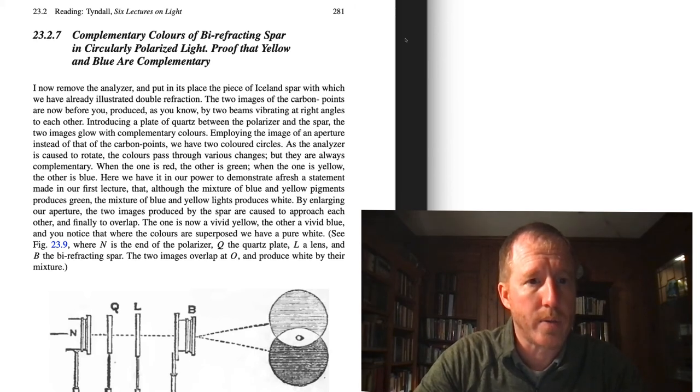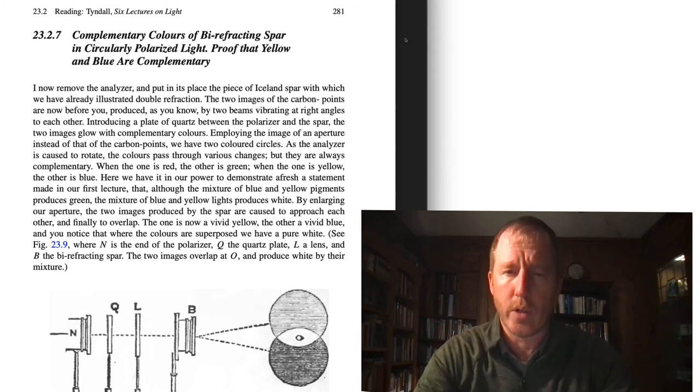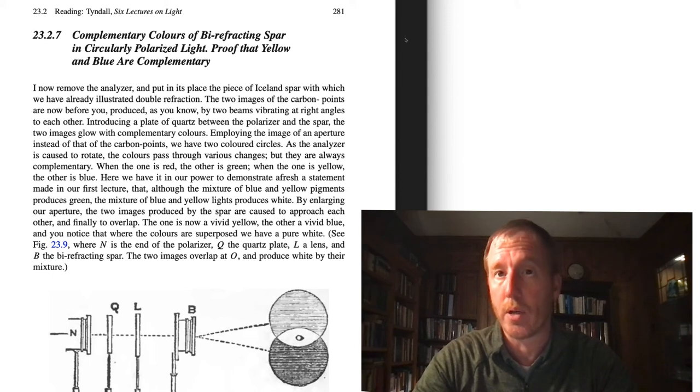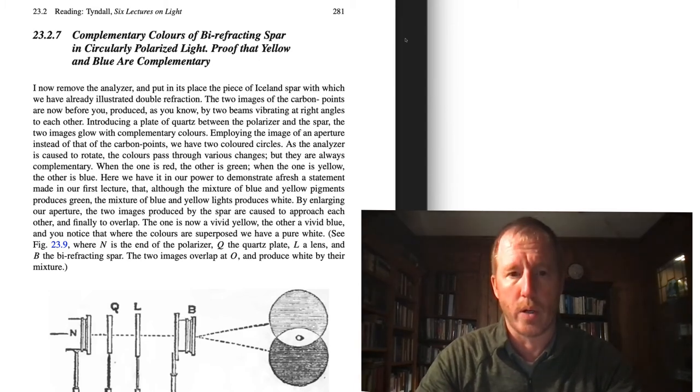Let me jump ahead to, he talks about some experiments. And I think this is a challenging section, page 281, where he illustrates that blue and yellow are complementary colors. And I don't want to spend a lot of time on this because I think he refers to some earlier sections in his lectures on light that we haven't read. So I think we don't have some of the background that's necessary to get a deep understanding of this. But let me just say that if you were to take blue and yellow pigments like paint and mix them together, you get green. But if you take blue and yellow light and you overlap them, you get white. And that's because blue and yellow are complementary colors.